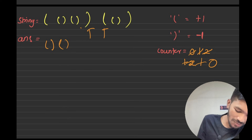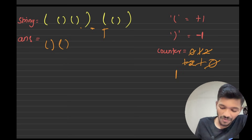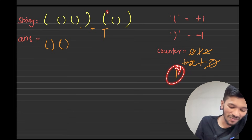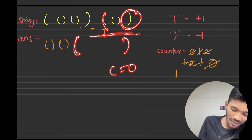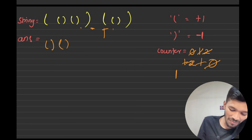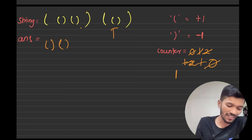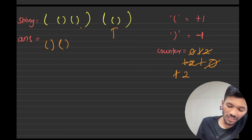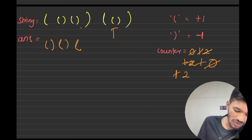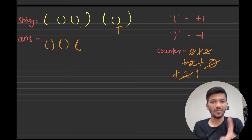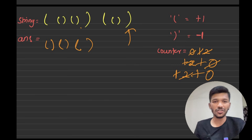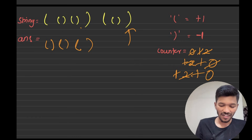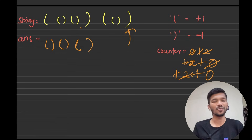Moving to the second composition, we come across an opening bracket — counter becomes one. Since counter is one, we don't take it, because traversing to the end would make it zero and there'd be no closing bracket. Moving ahead, we hit another opening bracket — counter becomes two — so we include it. Then a closing bracket brings counter to one — include it. The final closing bracket brings counter to zero — we don't include it. We now have the exact decomposed string.